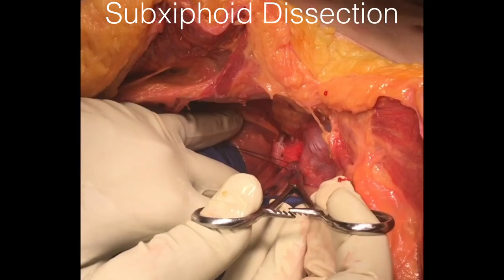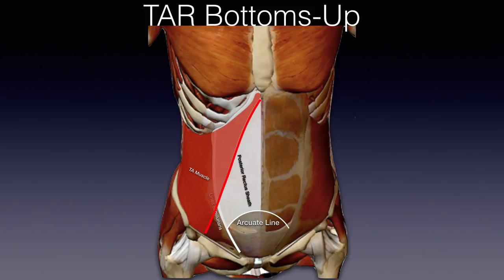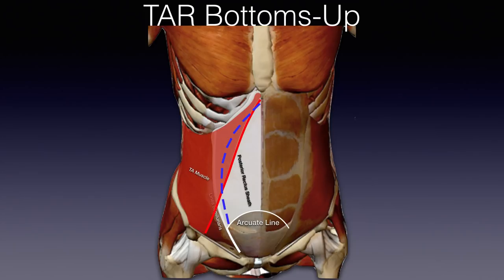We sometimes refer to performing transversus abdominis release as a bottoms-up dissection — the same release, except we go from the arcuate line at the bottom towards the upper midline. What happens is you start by dividing the posterior lamellar internal oblique and the transversus abdominis aponeurosis, and as you make your way towards the upper third of the abdomen, you then start dividing the transversus abdominis muscle fibers. You always follow the same principles: stay medial to the linea semilunaris and medial to the neurovascular bundles innervating the rectus abdominis. The best way to identify the arcuate line robotically is to identify the epigastric vessels, step posterior to them, and develop the space of Bogros — that step lets you reliably identify the arcuate line and start your release.